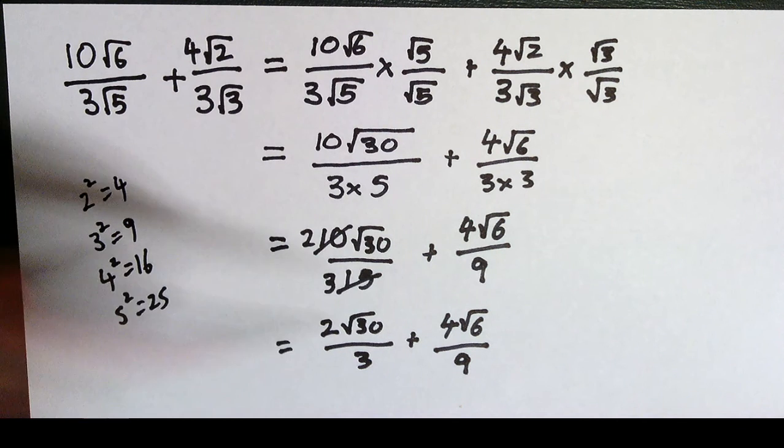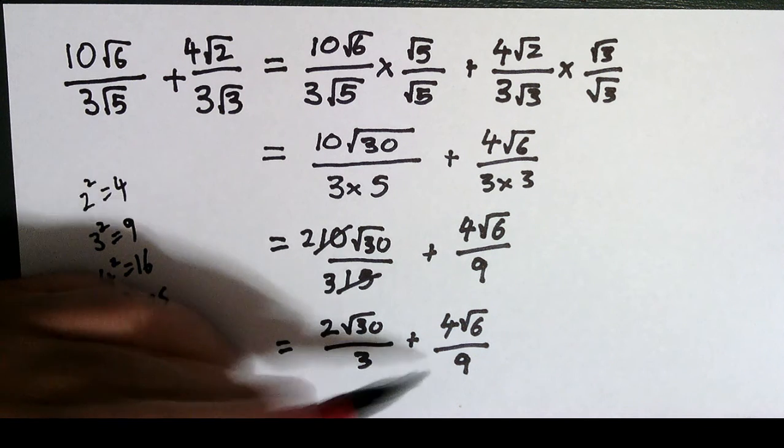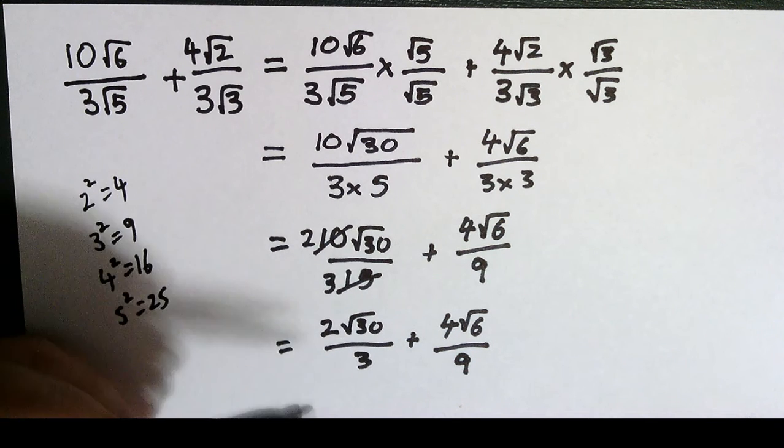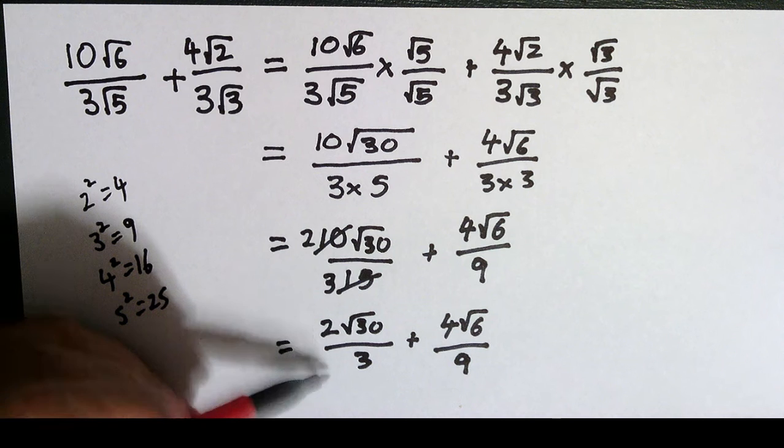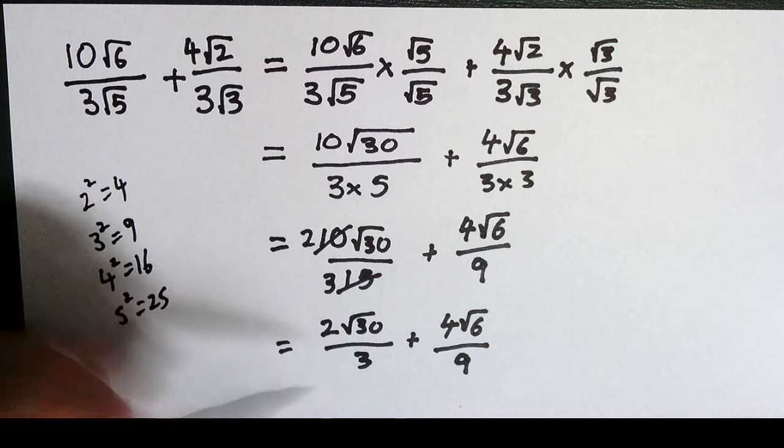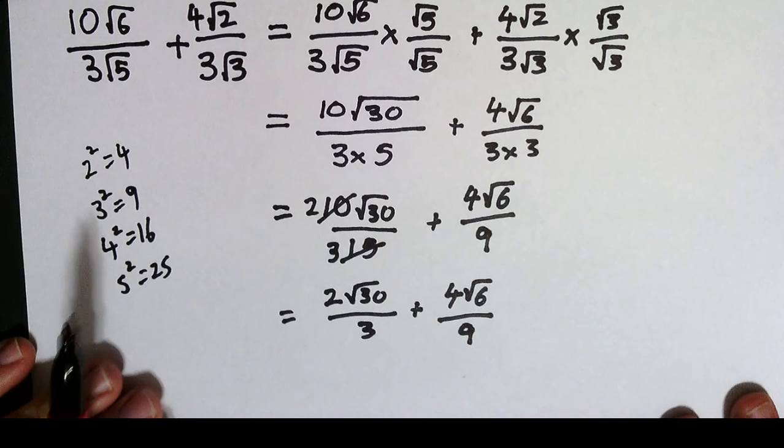Same deal, none of these numbers go into 6. I can't simplify the root 6. What I can do is I can get a common denominator between these two fractions. If I multiply this fraction by 3 on 3, then I'll get a 9 in my denominator, and then I can add these fractions.